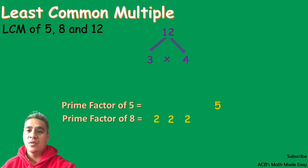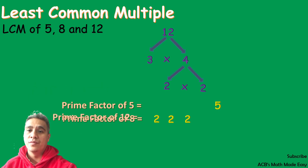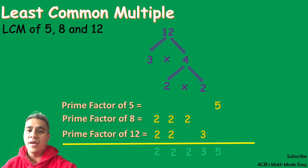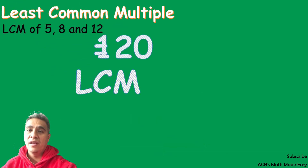And last, we will factor out 12 by 2 times 4. So the prime factors of 12 are 2, 2, and 3. Bring all the factors down and multiply them all: 2 times 2 times 2 times 2 times 3 times 5 is equal to 120. So the least common multiple of 5, 8, and 12 is 120.